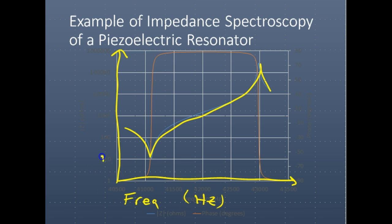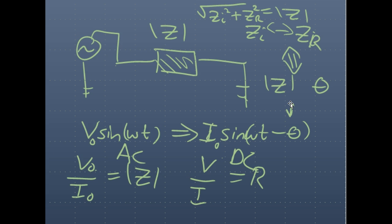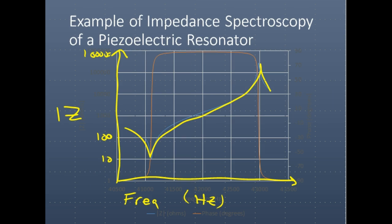And this is an impedance of 10 ohms, 100 ohms, so this is logarithmic, and this is 100,000. Here we have on the other side phase, which I'm going to draw now in a different color.